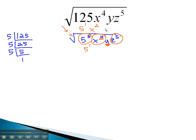Z to the 5th, when we divide that by 2, we get z squared with one z remaining inside the radical.